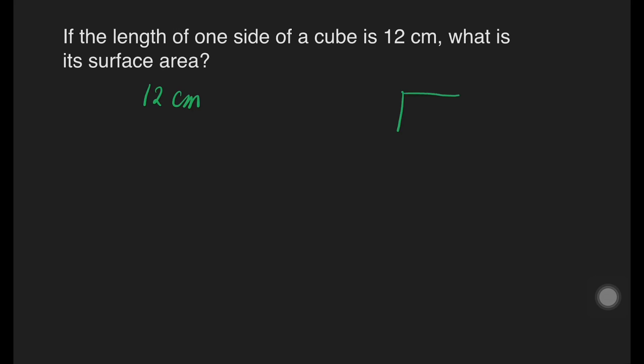How does a cube look like? It looks like a Rubik's cube. It is a solid three-dimensional figure which has six square faces, eight vertices, and 12 edges.